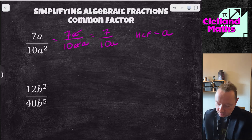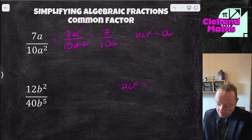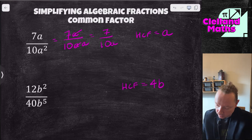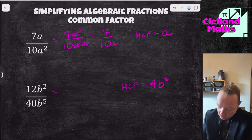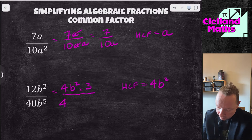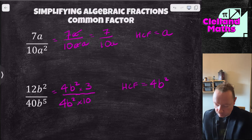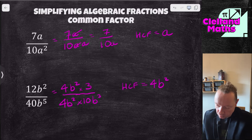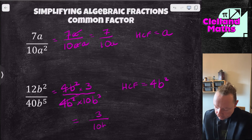On the bottom example, the common factor between 12 and 40 is 4, and I've got b squared and b to the 5, so b squared is the common factor. Writing it out: 12 is 4b squared times 3, and 40b to the 5 is 4b squared times 10b cubed, because 3 plus 2 is 5. They cancel, leaving a nice answer of 3 over 10b cubed.